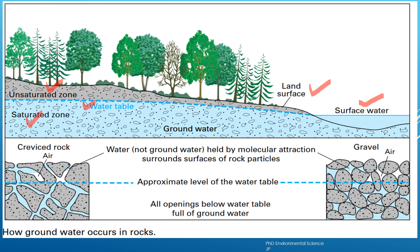Here you can see a creviced rock illustration showing how groundwater is held in different types of rocks. In creviced rock, water as well as air fills the spaces above the water table. Above the water table, both air and water are present in the pores. But below the water table, only water is present. The zone above the water table is the unsaturated zone, and the zone below is the saturated zone, where all spaces are filled with water.